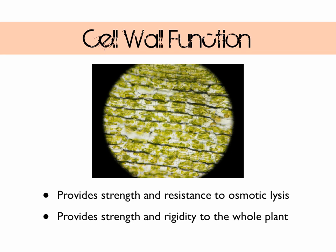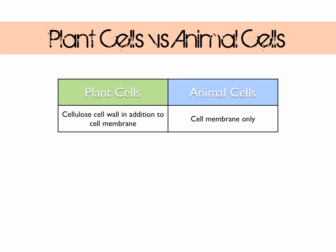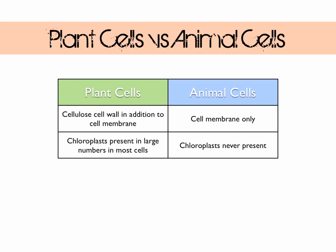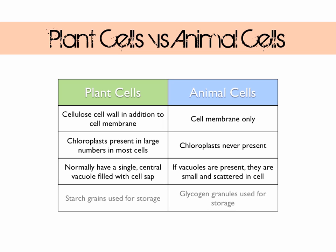Let's compare plant cells and animal cells. Plant cells have both a cell membrane and a cell wall, whereas animal cells only have a cell membrane. Plant cells have chloroplasts whereas animal cells don't. Plant cells have a large central vacuole, whereas if animal cells do have a vacuole they're going to be smaller and there will be a couple spread through the cytoplasm. Plant cells also have starch grains for storage, whereas animal cells use glycogen — as discussed in the previous video.